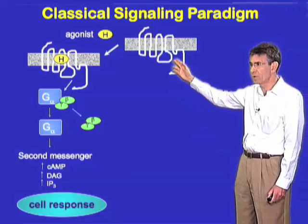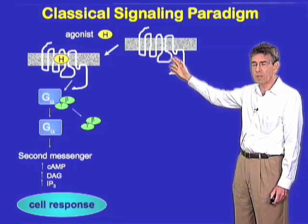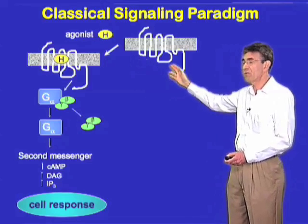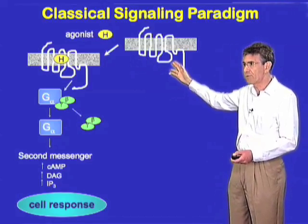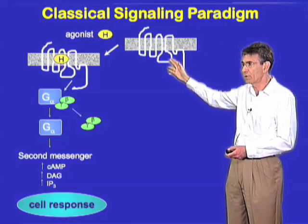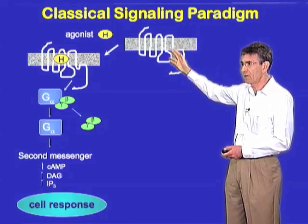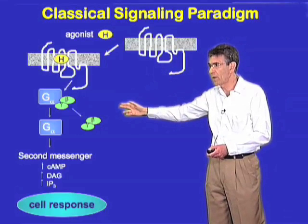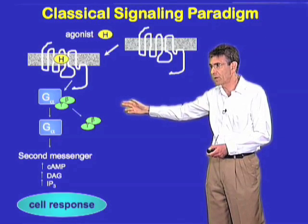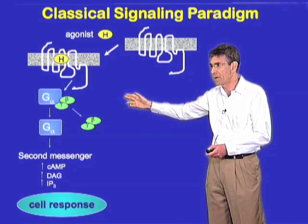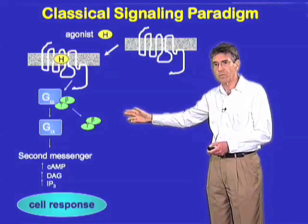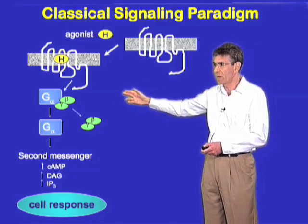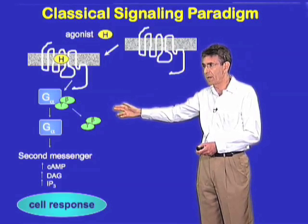So when one of these receptors — for example the so-called beta-adrenergic receptor for adrenaline or noradrenaline — is stimulated by its agonist, it changes shape or conformation. This allows it to interact with a heterotrimeric G-protein, in this case Gs. These proteins are referred to as heterotrimeric because they consist of three distinct subunits, in this case termed alpha, beta, and gamma.